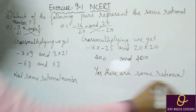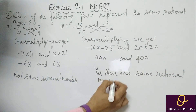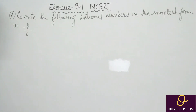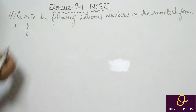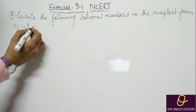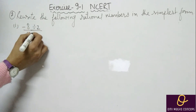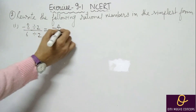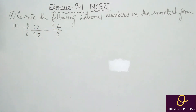Remaining questions you will do yourself. Now question number 7: rewrite the following rational numbers in the simplest form. Simplest form means aapko cut karke lowest form mein laana hai. So minus 8 by 6 — dono number kis se divide honge? 2 se divide honge. Toh divide by 2 — dono mein same number hona chahiye. Divide by 2 kiya toh kya hai: minus 4 by 3. Yeh simplest form aa gayi.